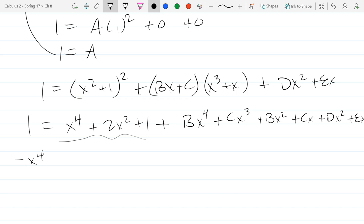We have negative x to the fourth, now there's no x cubes so I'm going to write that explicitly: 0x cubes, minus 2x squared, and 0x plus 0. It might seem silly to write all these 0's, but I'm just filling in the gaps.